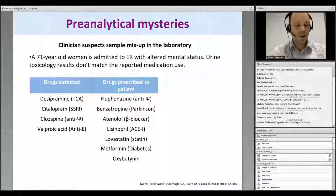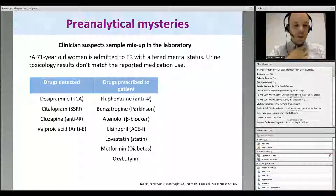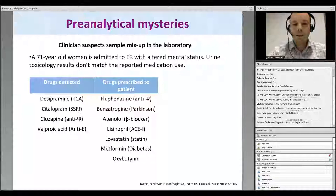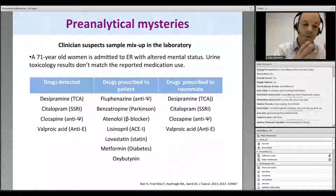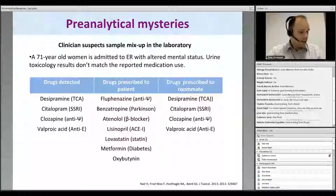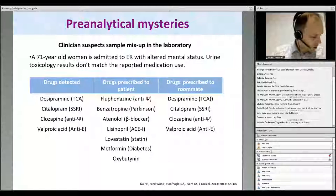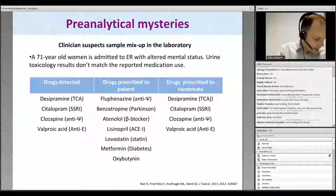The clinician called the lab suspecting a mix-up; the nursing staff was 100% sure the sample was from the right patient. However, a trainee in laboratory medicine looked at the patient file and found that six months before, the same lady had been admitted to the emergency room with similar altered mental status and the same drugs in her urine. A thorough investigation revealed that the drugs found in the urine were the drugs prescribed to the roommate of the patient at her nursing home. This clearly shows the problem can be upstream of the hospital and that solving a pre-analytical mystery can improve patient safety.